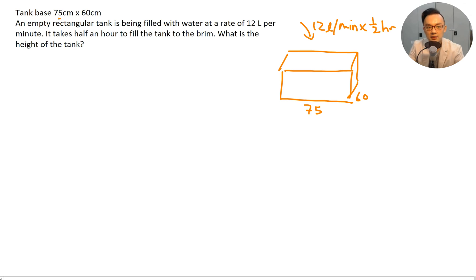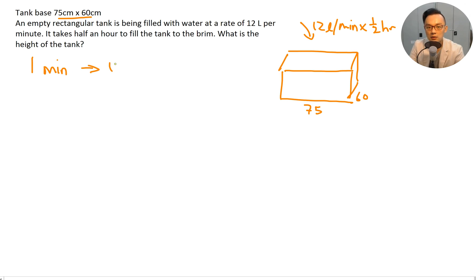A tank with base 75 cm by 60 cm: an empty rectangular tank is filled with water at a rate of 12 liters per minute, and it takes half an hour to fill the tank to the brim. What is the height of the tank? Half an hour is 30 minutes, so 30 times 12 equals 360 liters of water.